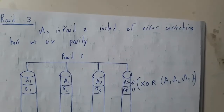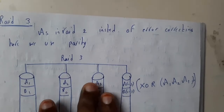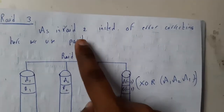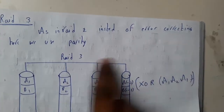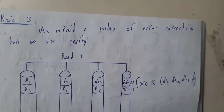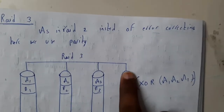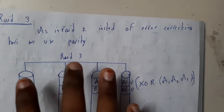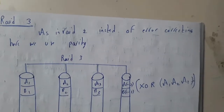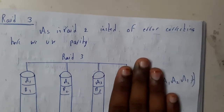Because RAID 2 was too expensive, RAID 3 came into play. Instead of using many disks for error correction codes, here we store the parity in a single disk. The data bits a1, a2, a3 are the same as before, and the parity — which is the XOR of those three bits — is stored in a single disk. If any errors or bugs occur, we can rectify them using this parity code.